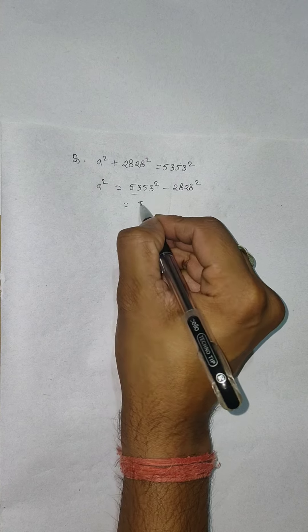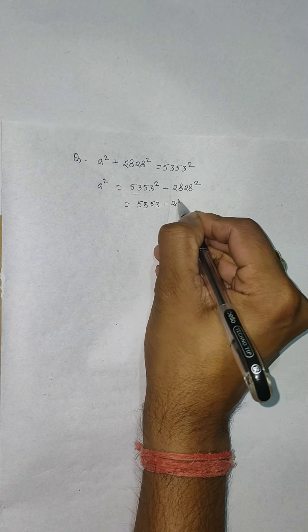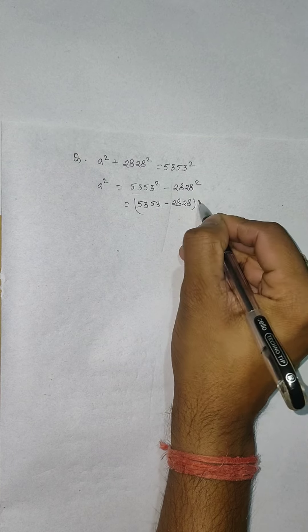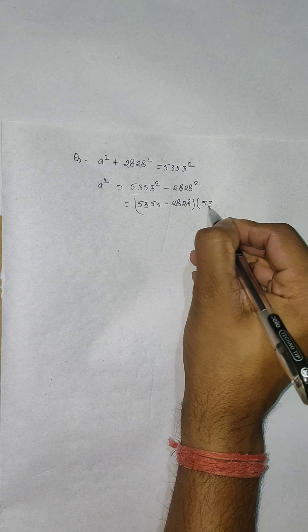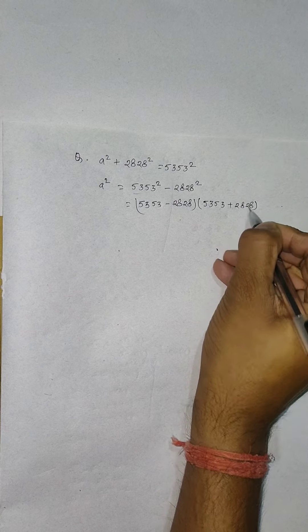This will be (5353 - 2828) and another bracket (5353 + 2828). This is a minus b and this is a plus b.